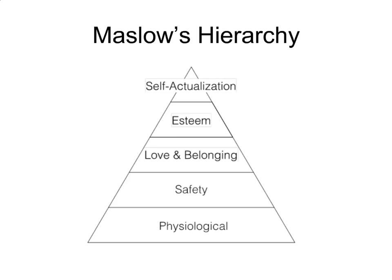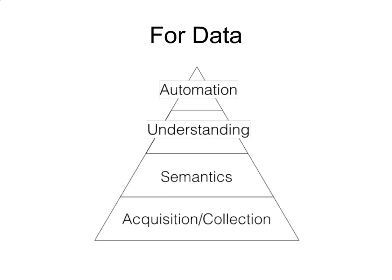My conceptualization of this problem draws on Maslow's hierarchy. Maslow felt that human beings had a hierarchy of needs — the lowest level being physiological needs: food, clothing, shelter — then safety, love, and belonging, all the way up to self-actualization, your long-term hopes and desires. His observation was that when the lowest level of the pyramid isn't there — when you don't have food, clothing, and shelter — you're not thinking about self-actualization. But when you do have those things, you kind of forget they're there.